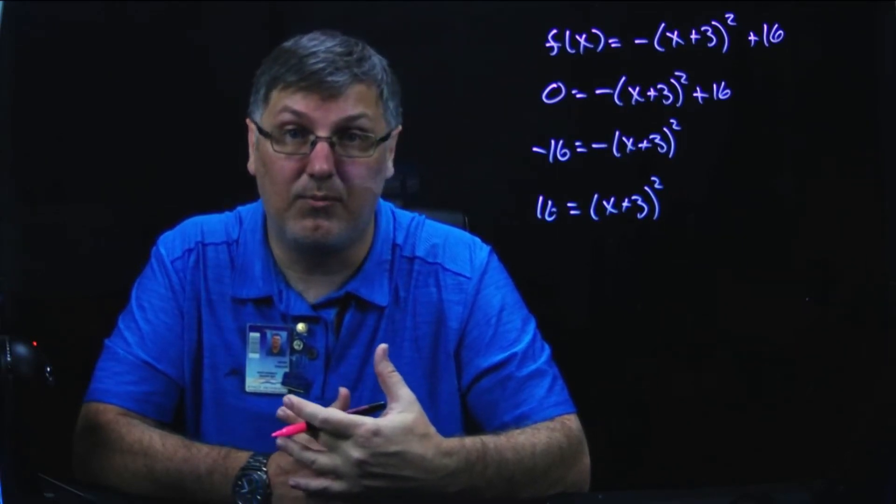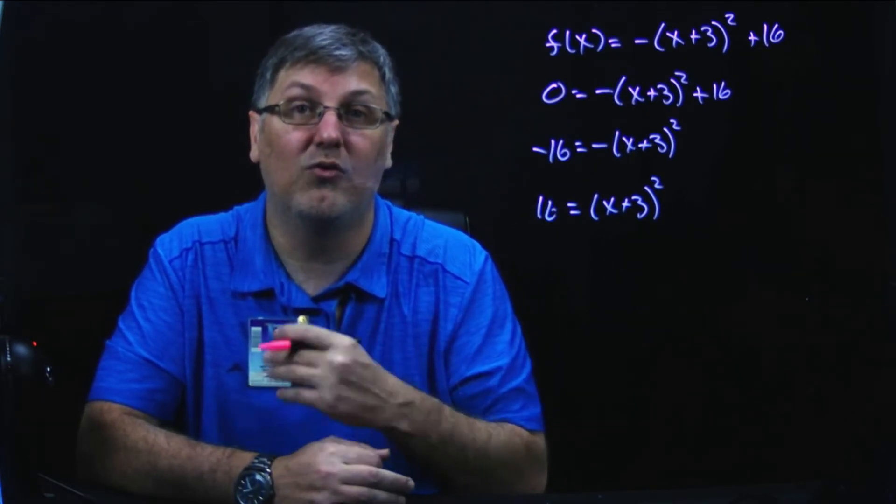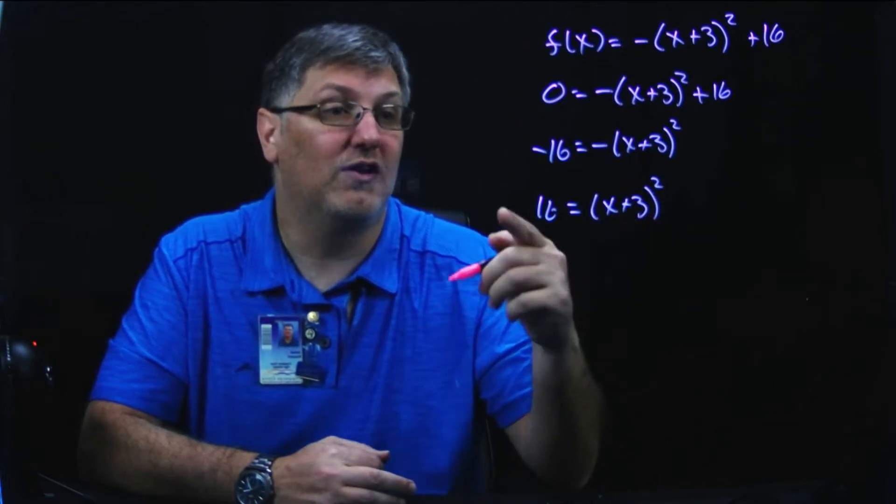Now, I'm going to take the square root. This is where people will make the mistake in this type of problem. Whenever you take a square root, you need to put a plus or minus in front of it because it's ambiguous. You don't know if it's going to be the positive case or the negative case.